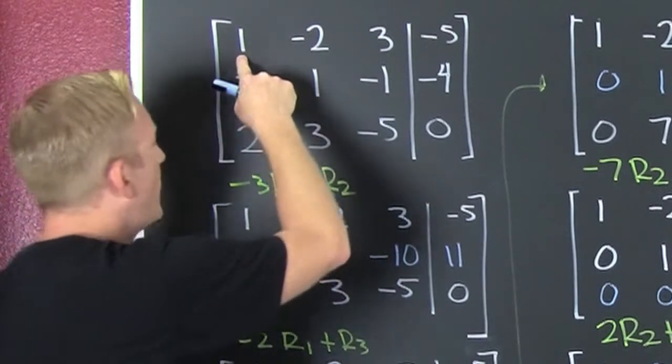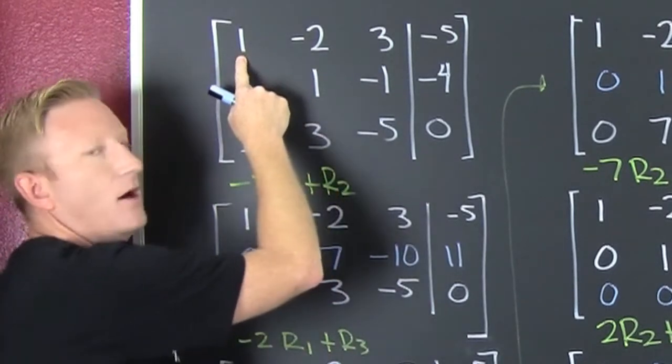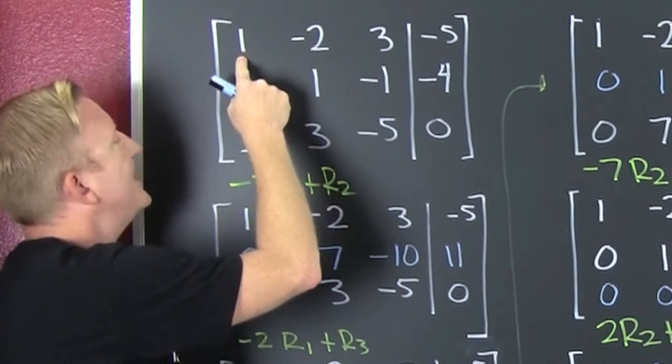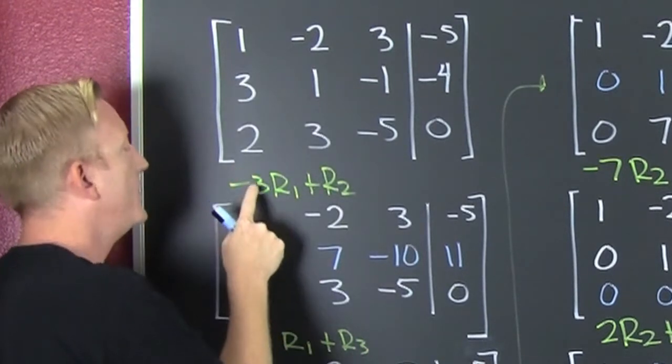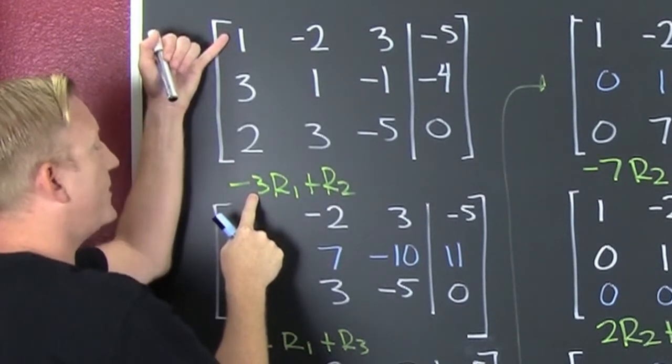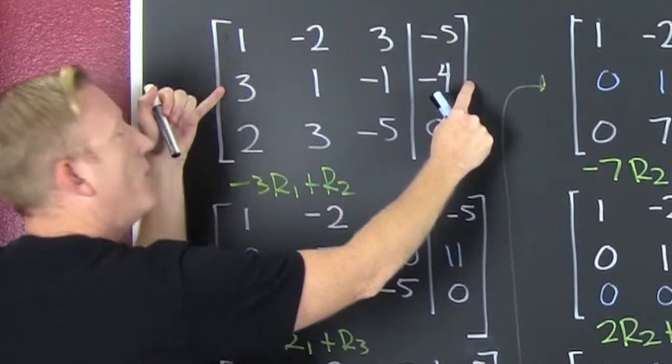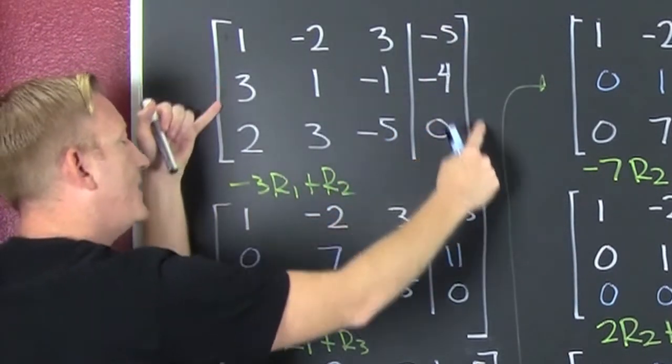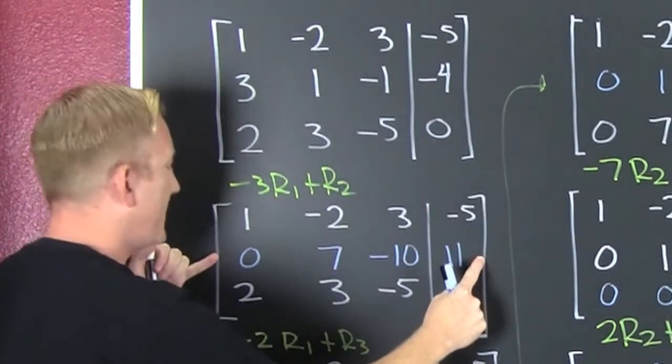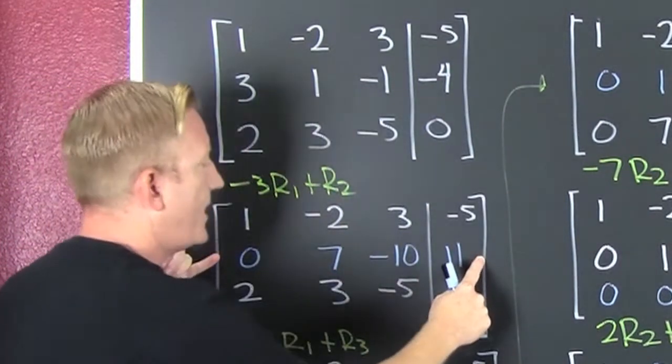We need to get a 1 in the upper right hand corner. Alright, it's already done for us. So then we need to kill the rest of that column. So we multiply that by minus 3. We multiply the entire row by minus 3 and we add it to this row, working off the previous matrix C. And when we do that, we get 0, 7, minus 10, and 11.